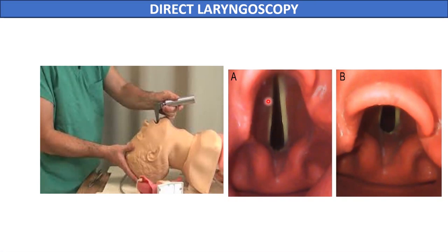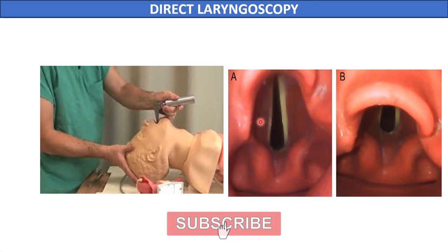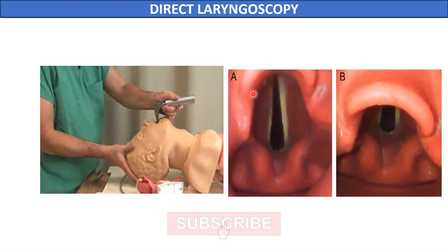The two true vocal cords appear pearly white in color as they lack capillaries. The false vocal cords lie lateral to the true cords and appear pinkish in color. We can also visualize the epiglottis, aryepiglottic folds, and arytenoid cartilages covered with mucosa using this procedure.